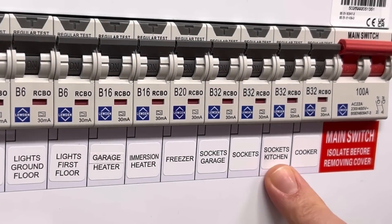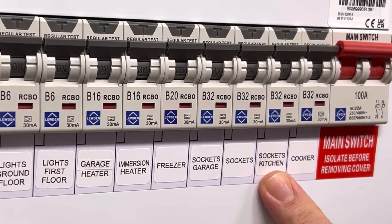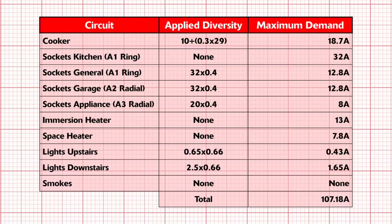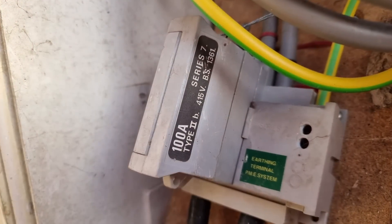So for a 32-amp ring final circuit, the current demand is 32 amps. In this installation we've got two 32-amp ring final circuits, so we take 100% of the current demand of the largest circuit, which is 32 amps, and then 40% of the other 32-amp circuit.